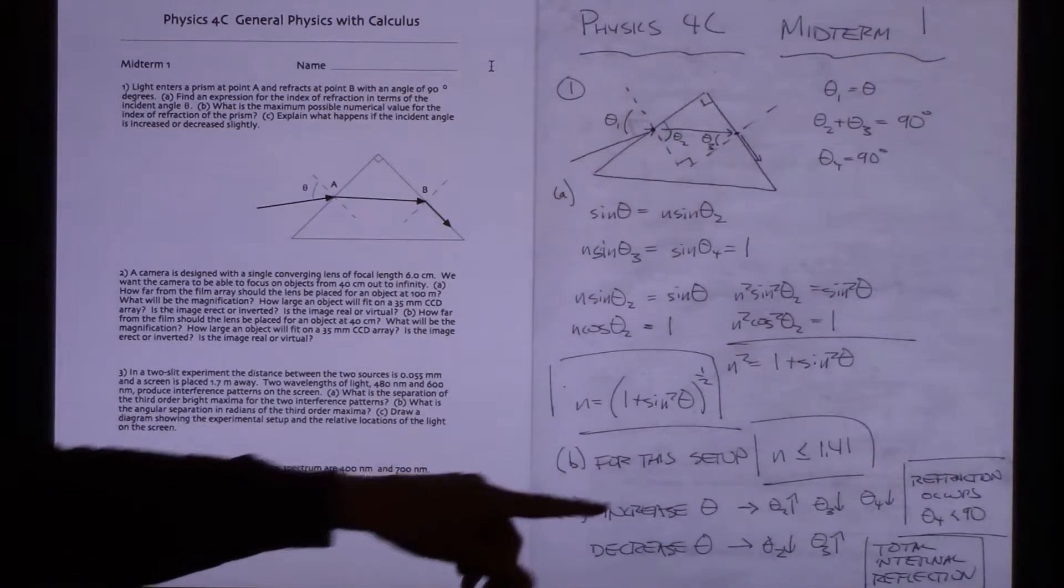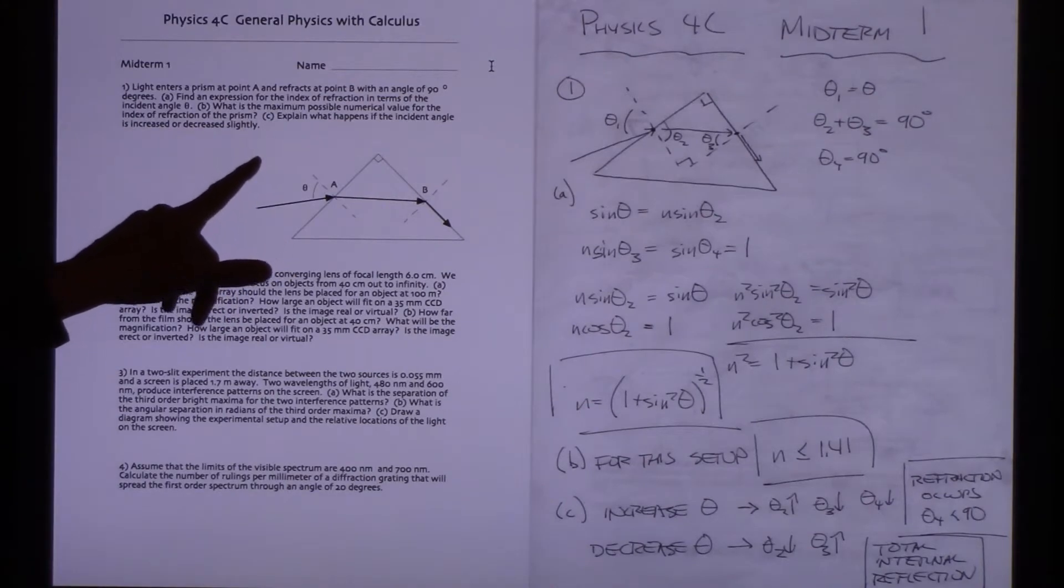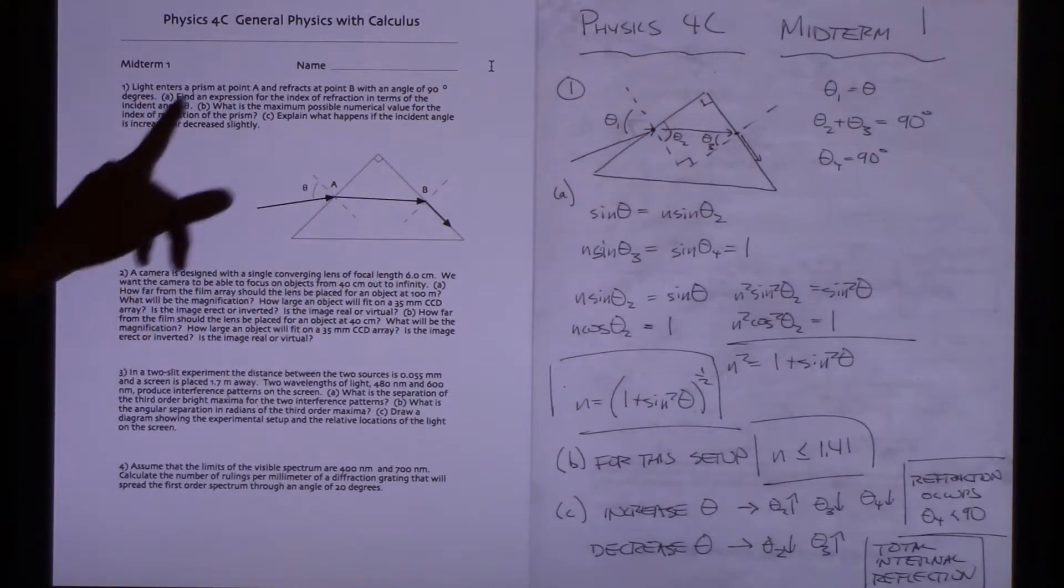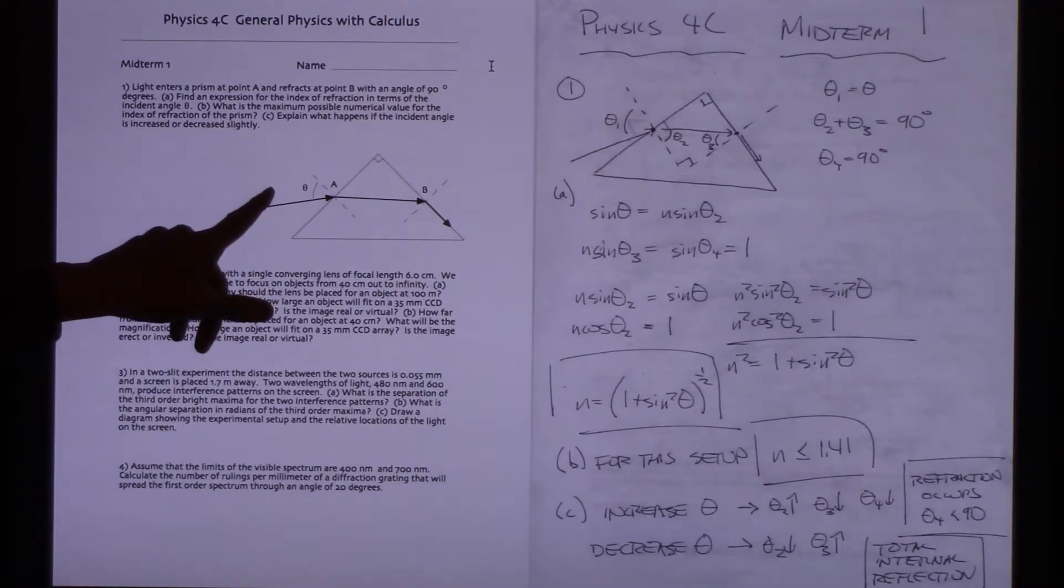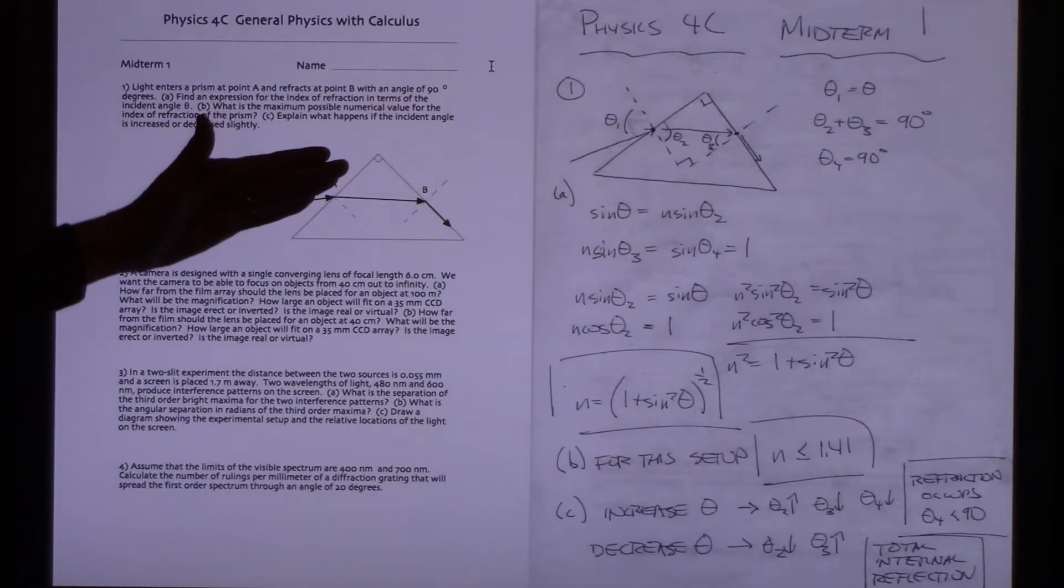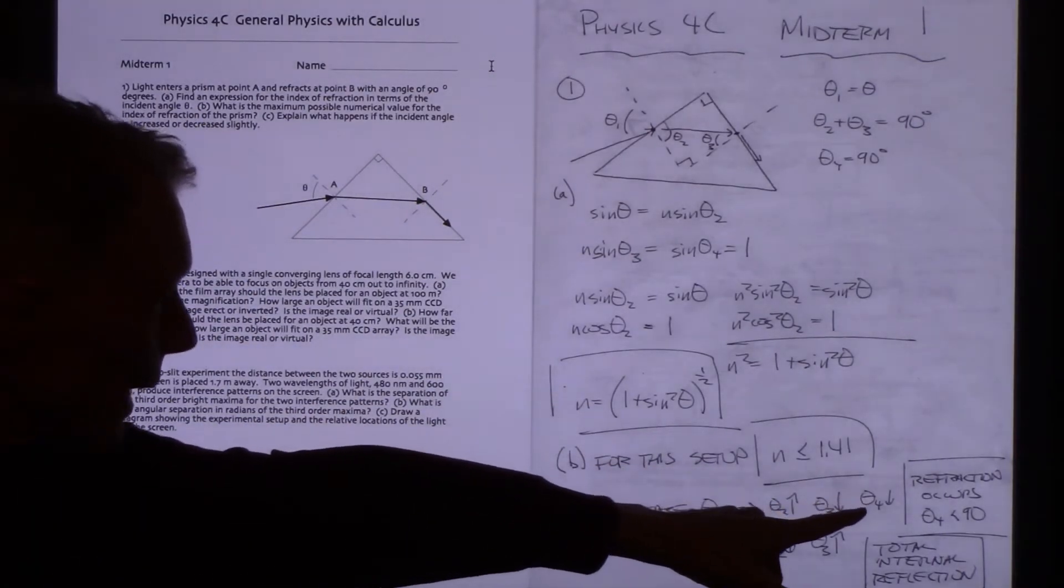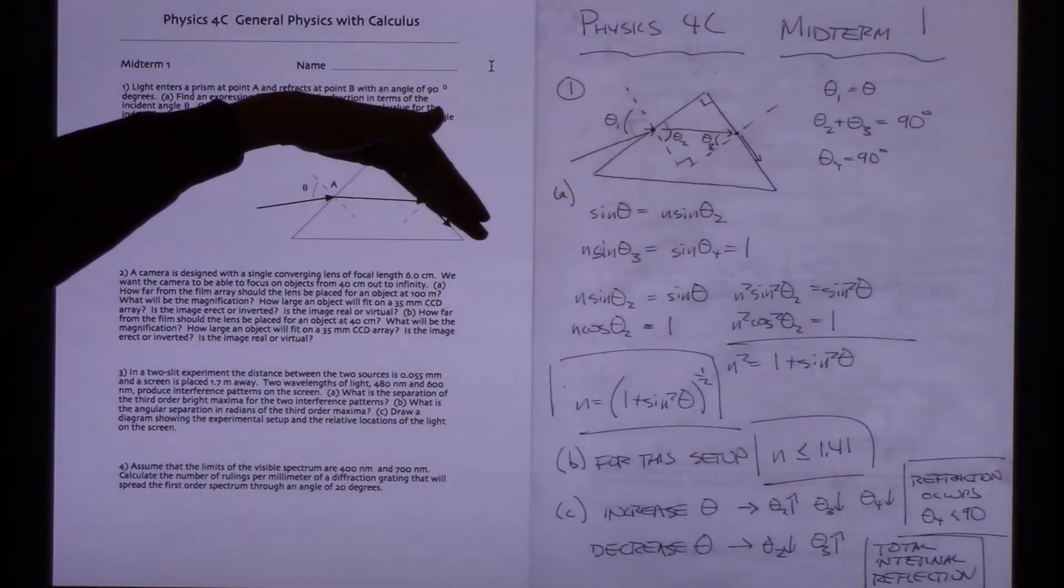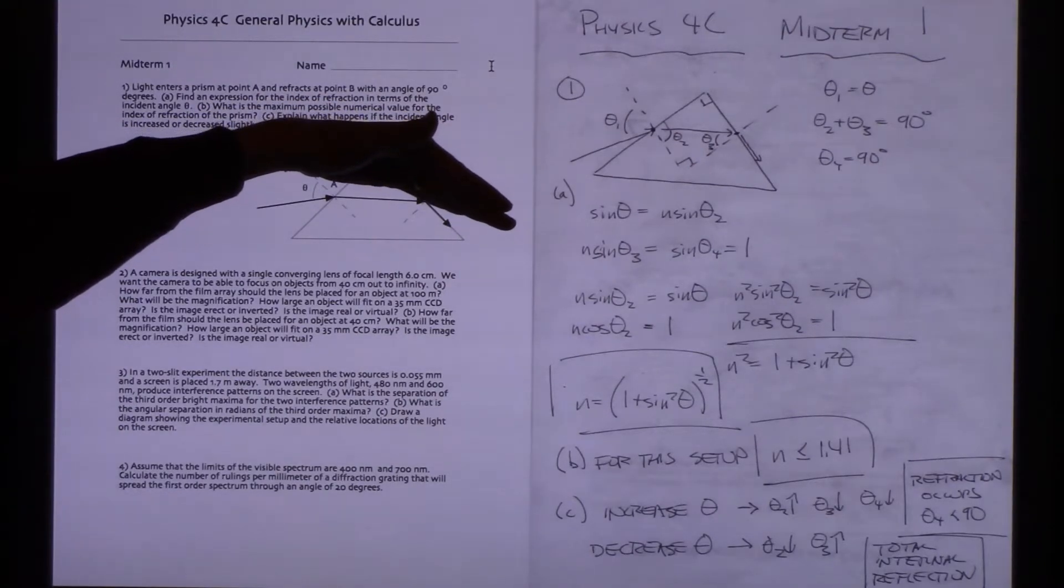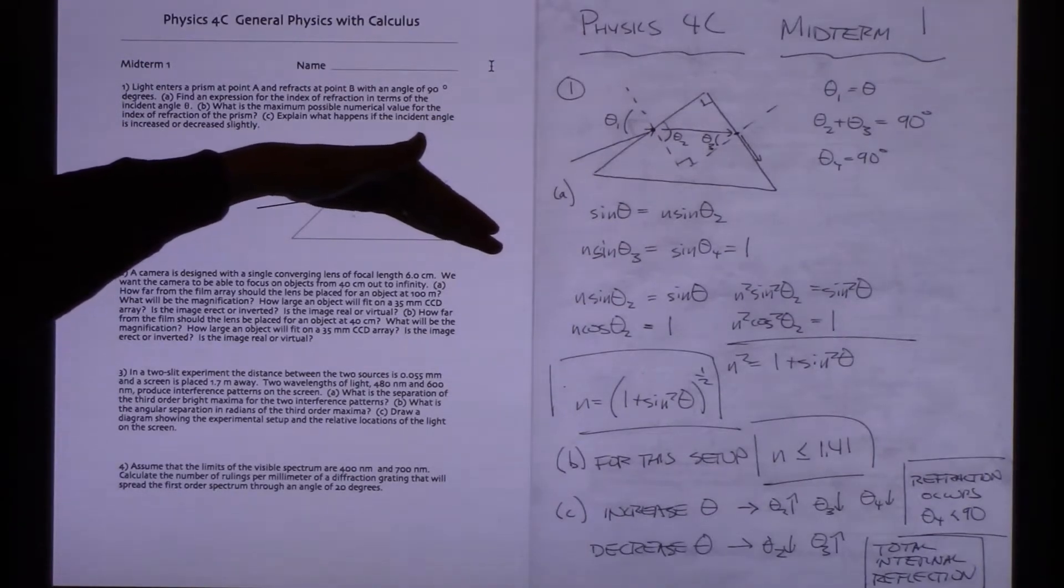For this setup, that would be the possibilities. And then it just asks qualitatively, what happens if we take a look at this setup and we slightly increase or decrease the incident angle? What happens if theta 1 is increased a bit? Well, if theta 1 increases, theta 2 will increase, theta 3 goes down, theta 4 goes down, and that says that this angle of refraction shifts away from the surface. So we will have refraction taking place.